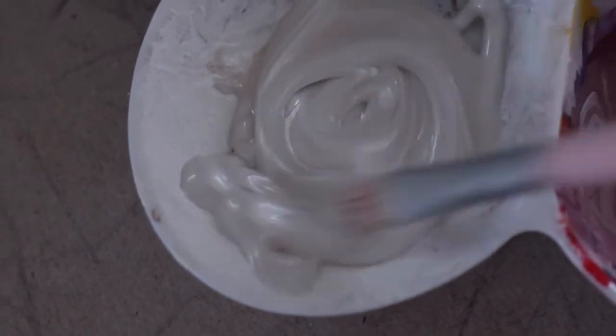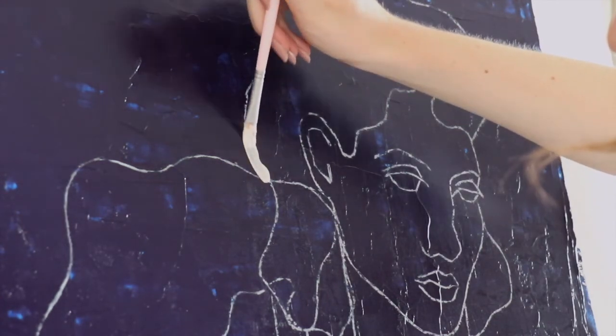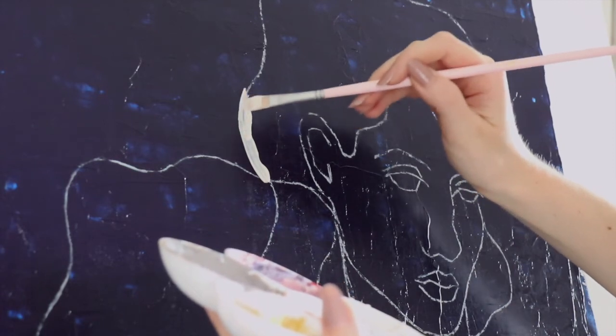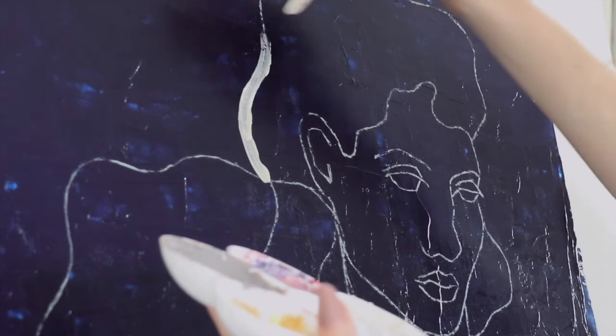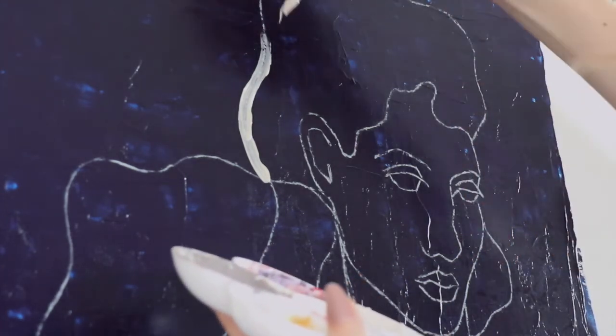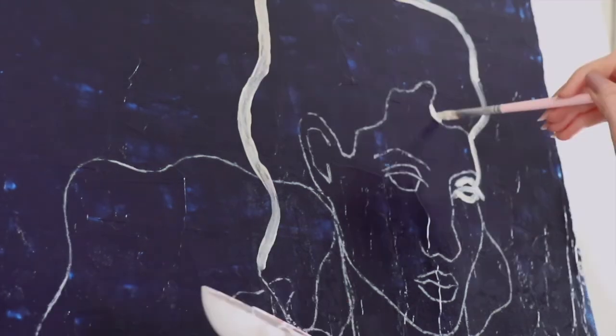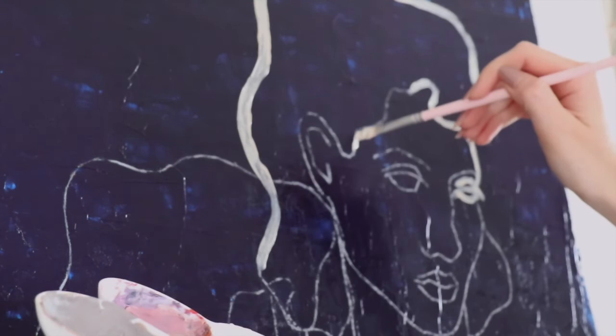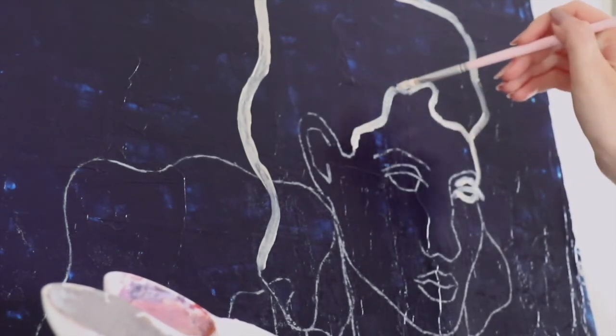So I took those off and then mixed a pearl effect white color with an ivory white because I wanted something that would have a pigment to it that would contrast the cold, darkish blue color. Then I traced the design that I transferred before.